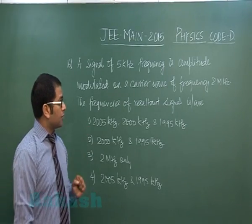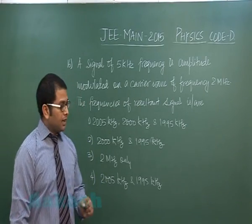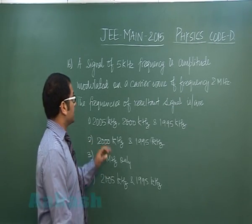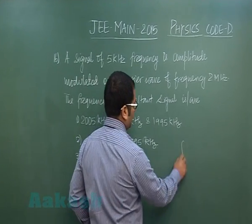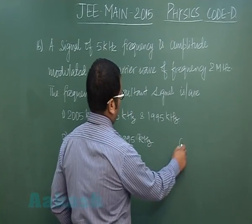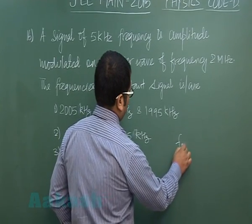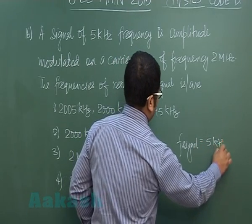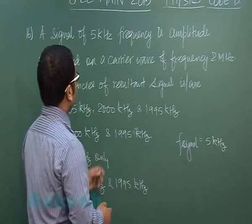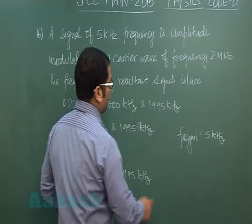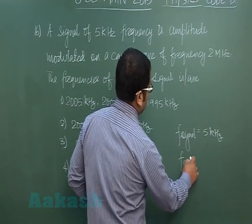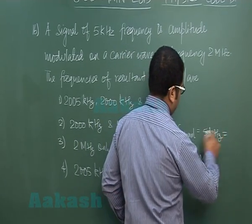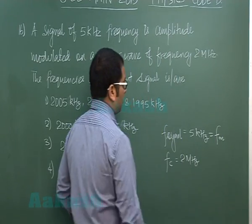Question number 16 is from principle of communication on the topic of amplitude modulation. A signal of frequency 5 kilohertz (F_signal = 5 kHz) is amplitude modulated on a carrier wave of frequency 2 MHz. The signal frequency is also called the modulating signal frequency.